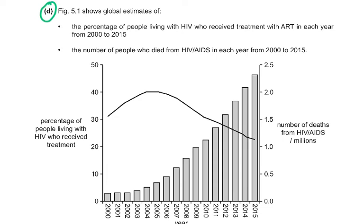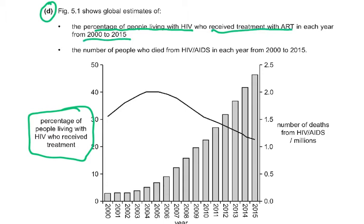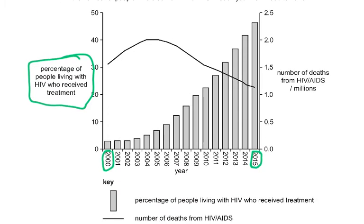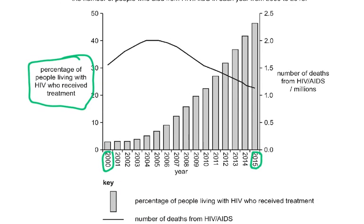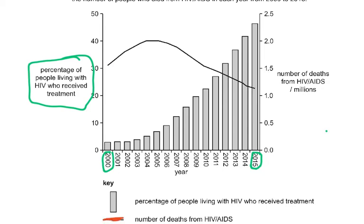Figure 5.1 shows global estimates of the percentage of people living with HIV who receive treatment with ART in each year from 2000 to 2015 — a 15-year period. There are also data on the number of people who died from HIV. The bars show the percentage of people living with HIV who receive treatment, and the line shows the number of deaths, which went up and then came down.